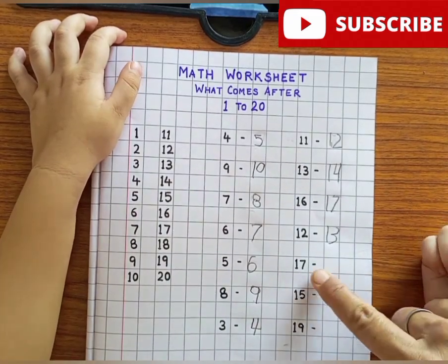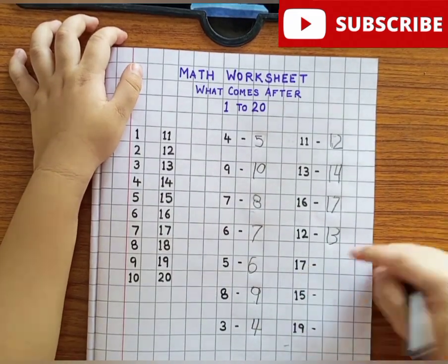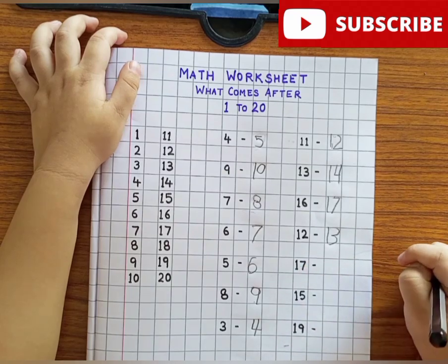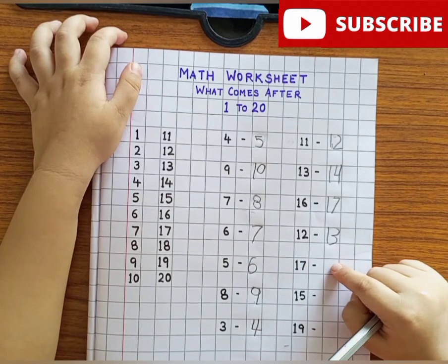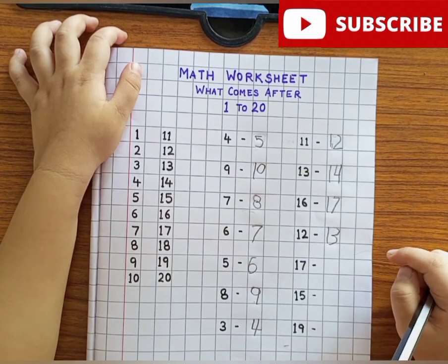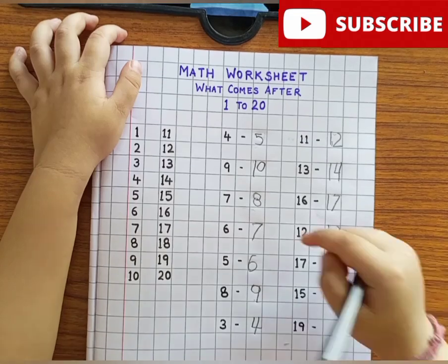Next number is? 17. What comes after 17? 18. Find number 18.